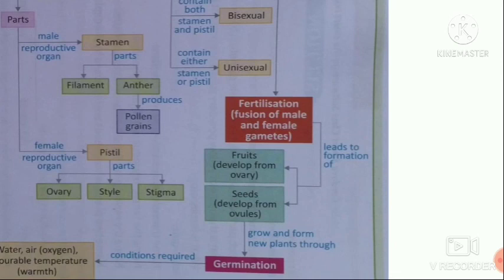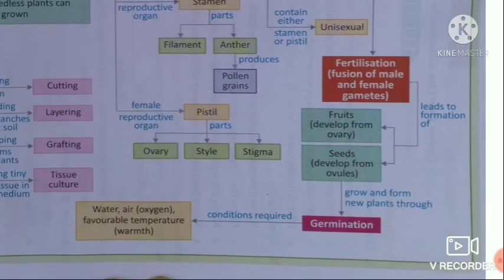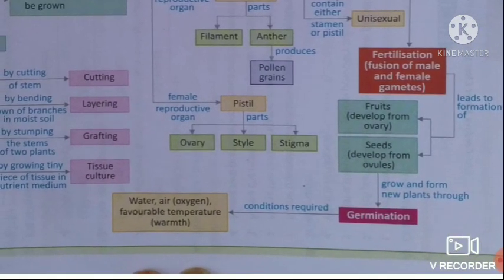After fertilization, the ovaries develop into fruit and the ovules turn into seeds. In favorable conditions — water, air, and warmth — these seeds will germinate. This is all about reproduction in plants which we read in this chapter. Thank you.